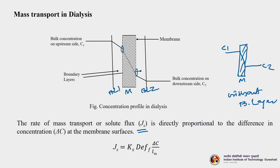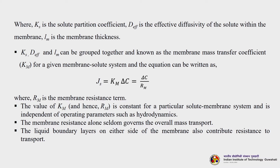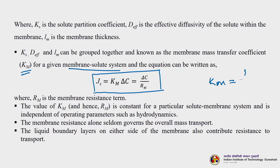The solute flux Js is directly proportional to the concentration difference at the membrane surface: Js = Ks × D_eff × ΔC / L_M, where Ks is the solute partition coefficient, D_eff is the effective diffusivity of the solute within the membrane, and L_M is the membrane thickness. These constants can be grouped as the mass transfer coefficient Km for a given membrane-solute system: Js = Km × ΔC, where Km = 1/R_M, R_M being membrane resistance. Km and hence R_M are constant for a particular solute-membrane system and are independent of hydrodynamic operating parameters.